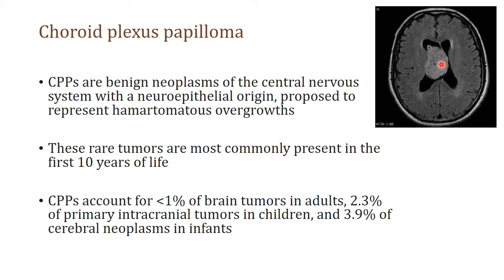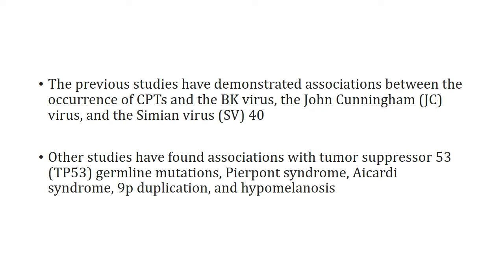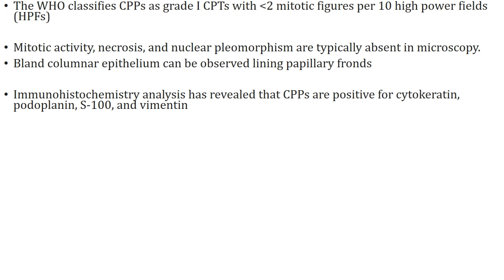Choroid plexus papilloma is a benign neoplasm of the central nervous system which typically has a neuroepithelial origin. It characteristically involves the ventricle system of the brain. These tumours typically occur in the first 10 years of life, accounting for less than 1% of brain tumours in adults, 2.3% of primary intracranial tumours in children, and about 3.9% of cerebral neoplasms in infants. There is a positive association with BK virus, JC virus and simian virus 40.